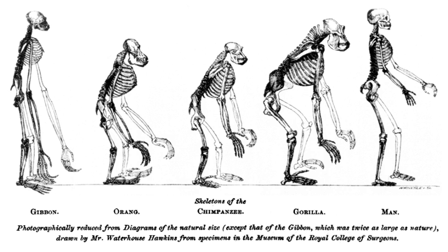George Evelyn Hutchinson's contributions to the field of ecology spanned over 60 years, in which he had significant influence in systems ecology, radiation ecology, limnology, and entomology. Described as the "father of modern ecology" by Stephen J. Gould, Hutchinson was one of the first scientists to link the subjects of ecology and mathematics.